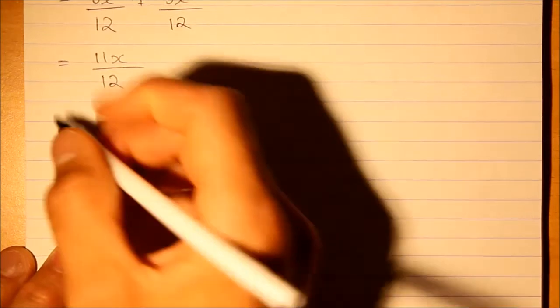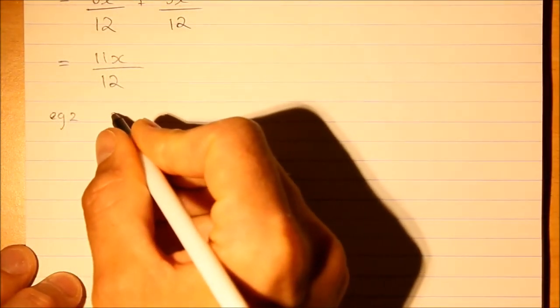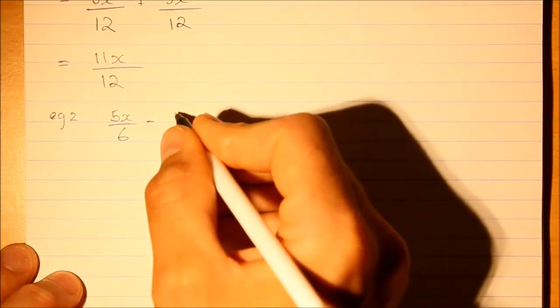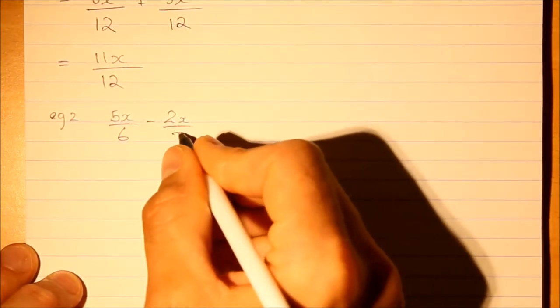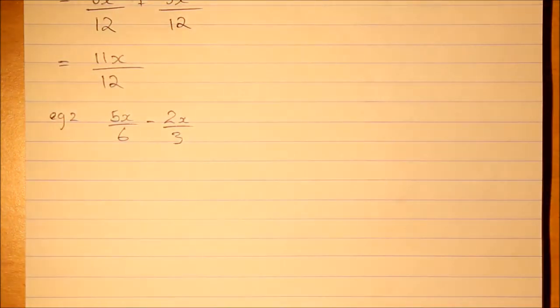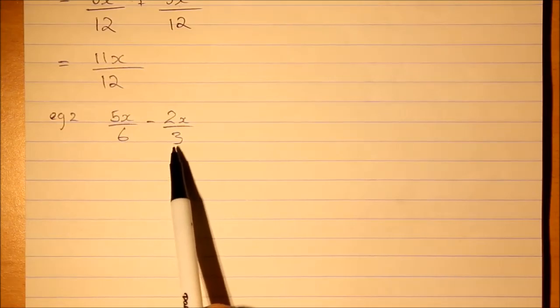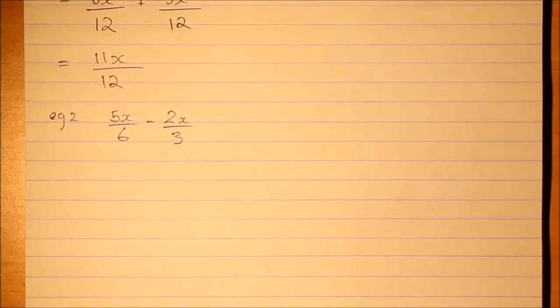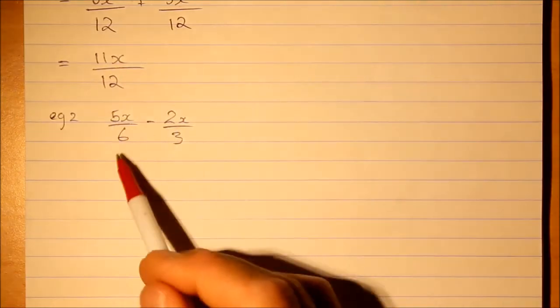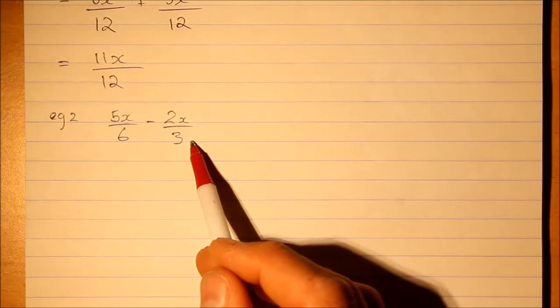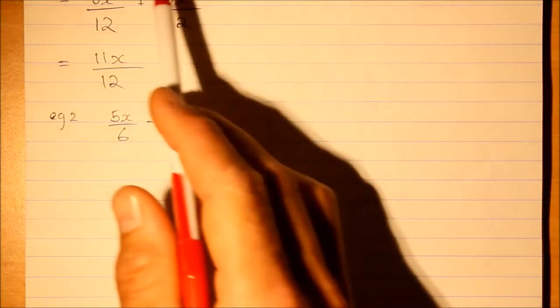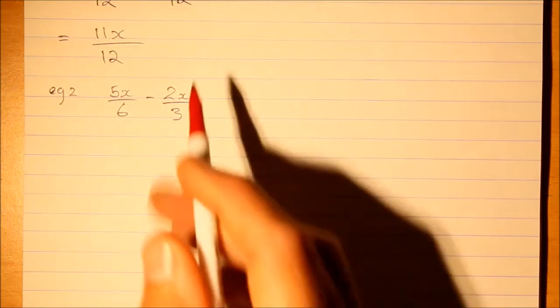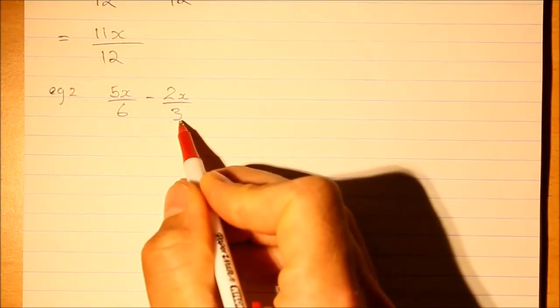Let's try another one with subtracting. So 5x over 6 and 2x over 3. I often see students multiply both sides, so you'd see people saying 'let's multiply the 3 by the 6 and the 6 by the 3,' just because that's what you do a lot of the times. But you don't have to. If you don't have to, it's easier not to.